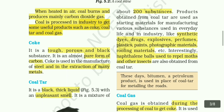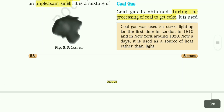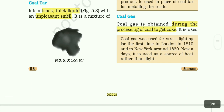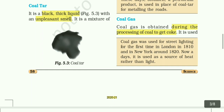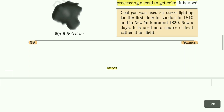These days bitumen, a petroleum product, is used in the place of coal tar for metalling the roads. Coal gas is used as a fuel in many industries situated near the coal processing plants. Coal gas was used for street lighting for the first time in London in 1810 and in New York around 1820.